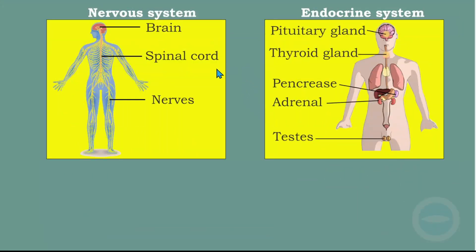The examiner wants us to know that humans have two systems to respond to the environment: the nervous system and the endocrine system. The endocrine system includes endocrine glands such as the pituitary gland, thyroid gland, pancreas, etc. The nervous system includes the brain, spinal cord, and nerves. These two systems respond to changes in either the external or internal environment.